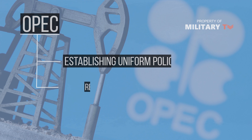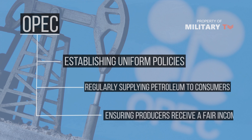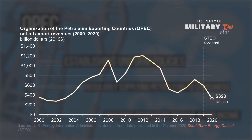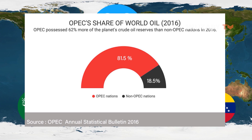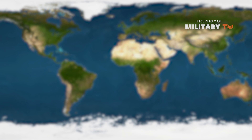OPEC's commission is to provide stability within the oil market by establishing uniform policies, regularly supplying petroleum to consumers, and ensuring producers receive a fair income. In short, OPEC helps bring order to the oil market. OPEC was formed by five oil-producing countries in the 1960s, and according to 2016 estimates, 81.5% of the world's crude oil reserves are located in OPEC countries.